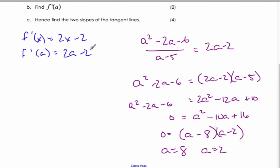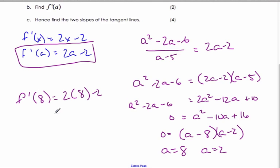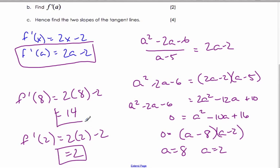Find the two slopes. Well, I have my derivative. Take my a values, plug it in. So f'(8) is 2 times 8 minus 2, which is 14. f'(2), which is 2 times 2 minus 2, 4 minus 2 is 2. So here are your two slopes.